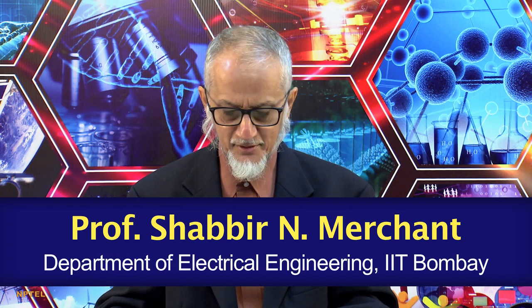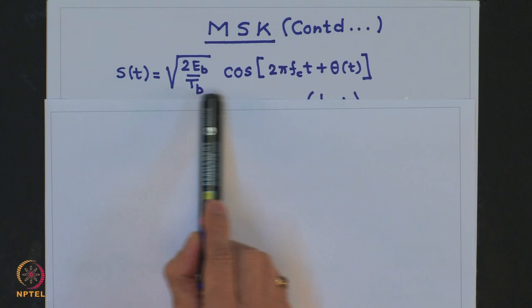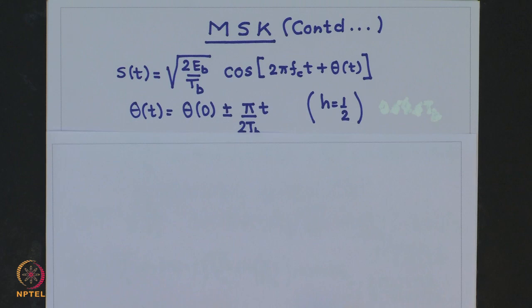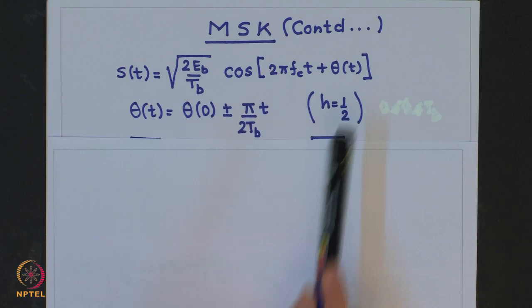We will continue our study of minimum shift keying. Let us quickly recollect what we have done earlier. We said that minimum shift keying is a form of continuous phase shift keying modulation, where the modulated signal S(t) is given by this expression, where theta(t), which is the phase of the modulated signal, is specified by this expression, where the deviation ratio is chosen to be half.